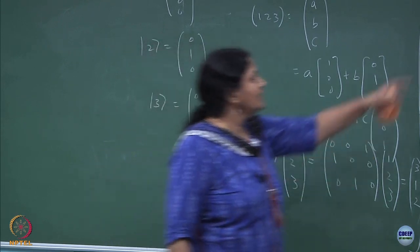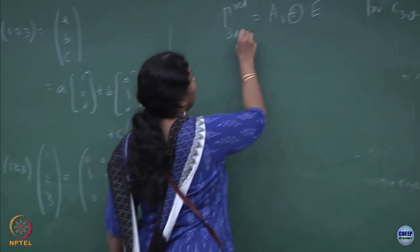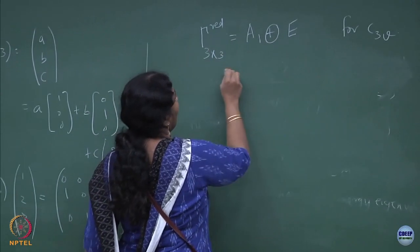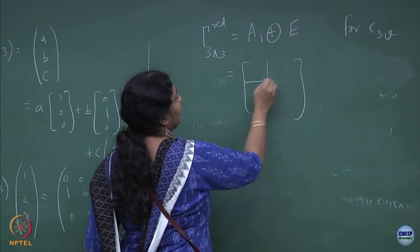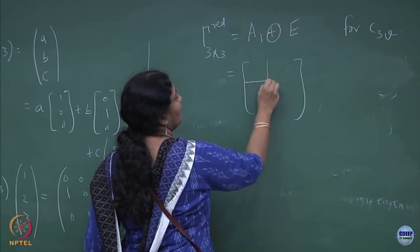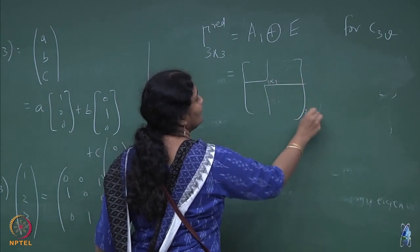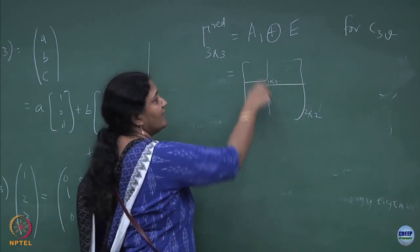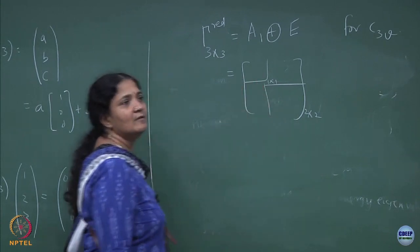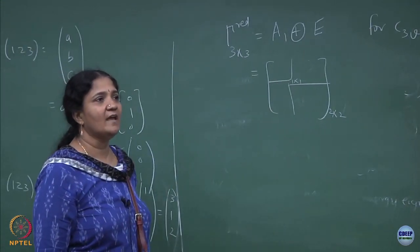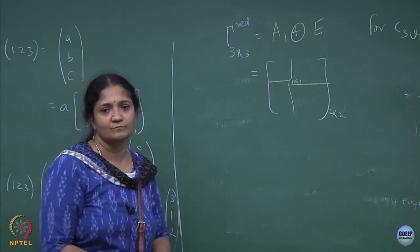Any 3×3 matrix can be brought into a block diagonal form which is 1×1 and 2×2, and these are the irreps of C3v.